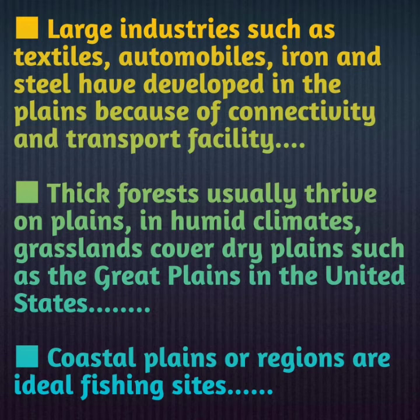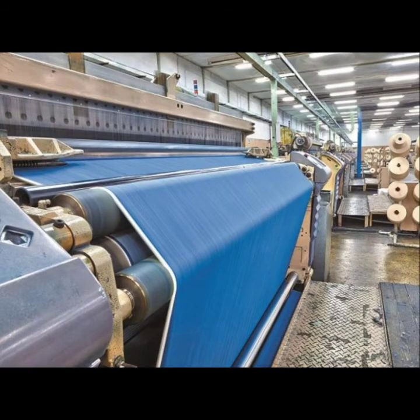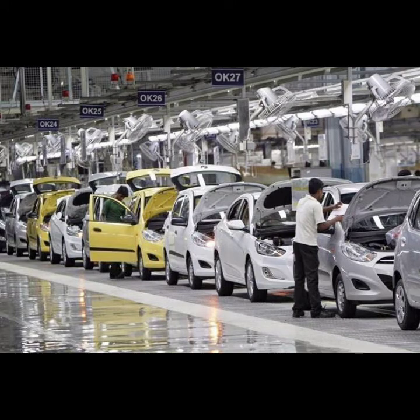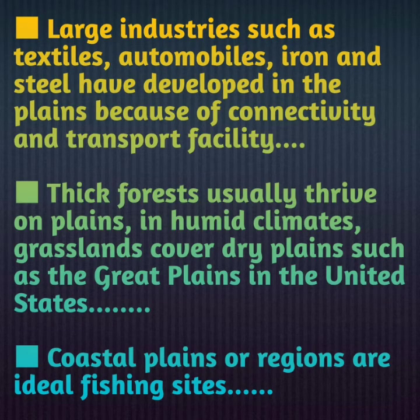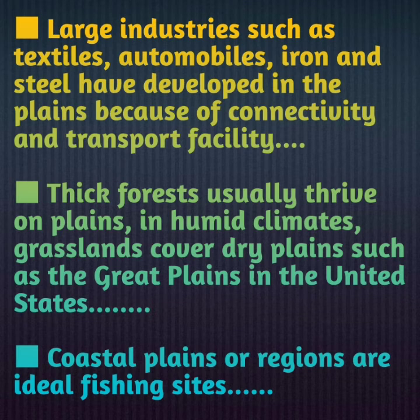Large industries such as textiles, automobiles, and iron and steel have developed in plains because of connectivity and transport facilities. All large-scale industries — the textile industry, automobile industry, and iron and steel industries — are mostly found in plains because industries are set up in areas where transportation is easily available, connectivity has no problems, and mobile network or internet connection is easily available. Plains provide the best conditions for this.